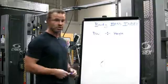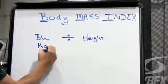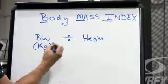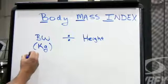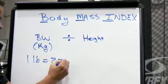It's really simple. You're going to take your body weight in kilograms, not pounds. If you have trouble converting that, one pound equals 2.2 kilograms.